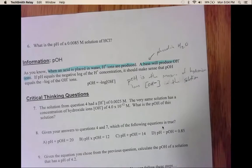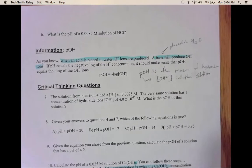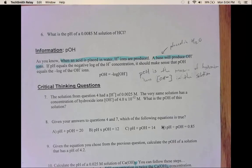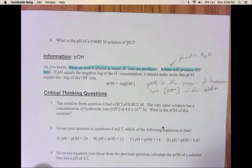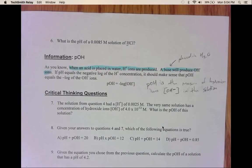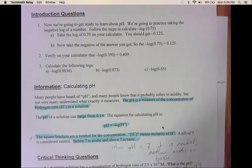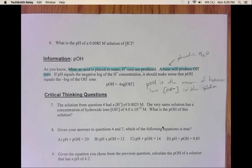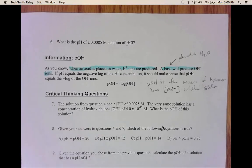Question 6 asks for the pH of a 0.0085 molar solution of hydrochloric acid. Set it up similarly to questions 5a and b. Break up HCl — it's an acid, as shown by the hydrogen in front. It dissociates just like HNO₃, except instead of nitrate you'll have chloride. Then find the hydronium ion concentration using the coefficients, and calculate pH using the pH formula.